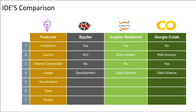The next feature is usage. Spyder is purely used for software development, website development, and game development. Whereas Jupyter Notebook and Google Colab are used more for data science work. This leads us to why we cannot use Spyder for data science work, and the answer is in the next feature: visualization.